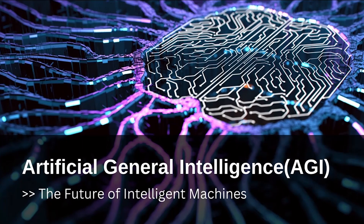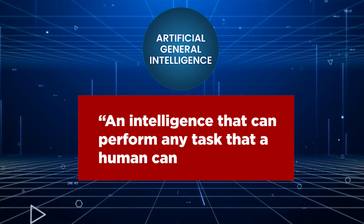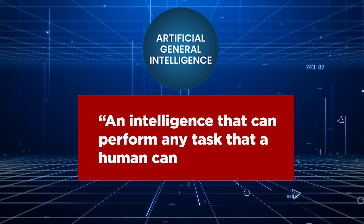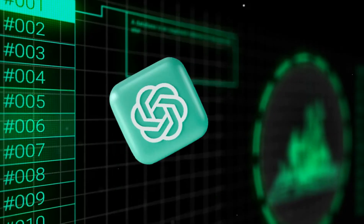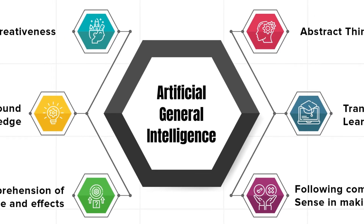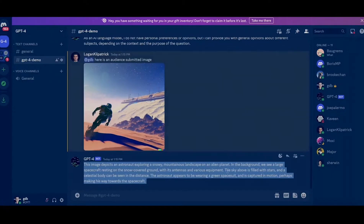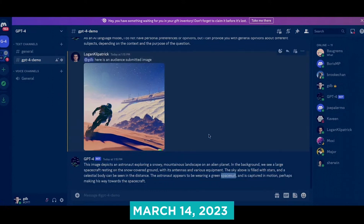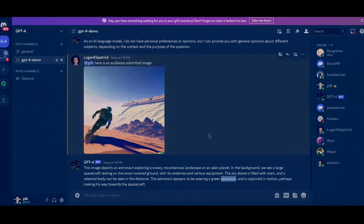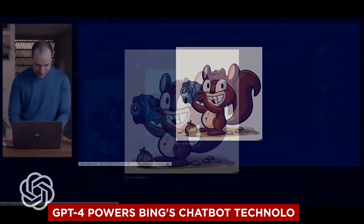Artificial general intelligence is the theoretical notion of an intelligence that can perform any task that a human can. By combining language and visual intelligence into one model, OpenAI has certainly contributed to its realization. During the GPT-4 developer livestream on March 14, 2023, Microsoft officially announced that GPT-4 powers Bing's chatbot technology.